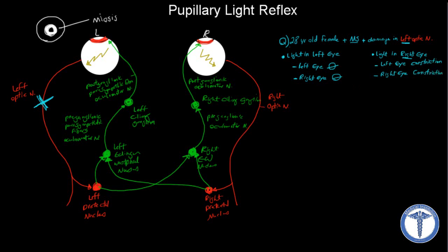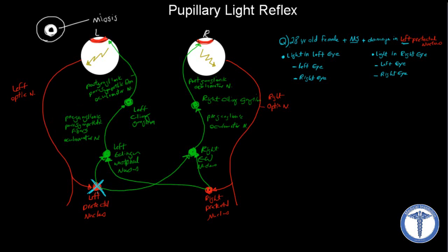Now let's give another example. We have the same patient, but now the damage is in the left pre-tectal nucleus. This is really the same thing as damage in the left optic nerve because the result is going to be exactly the same — here is why. The signals are going to be sent from the retina through the left optic nerve, which is not damaged in this case, and travel to the left pre-tectal nucleus. Since the left pre-tectal nucleus is damaged, we're not going to send any signals to either pathway, so both eyes are going to remain the same.